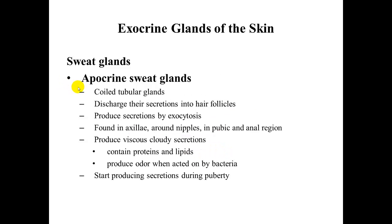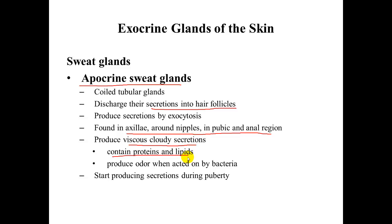The second kind of gland is the apocrine sweat gland. They don't discharge secretions onto the skin surface — rather, they discharge into hair follicles. They are found in the axillae, around nipples, and in the pubic and anal region. They produce a viscous, thicker secretion containing mainly proteins and lipids. This typically appears during puberty and produces an odor when acted on by bacteria, which is why young children don't have the same body odor as those after puberty.